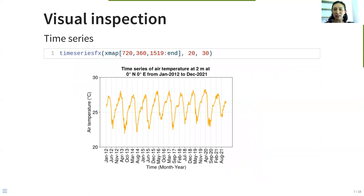We also do a visual inspection of time series. This is a pixel at the crossing between the equator and the prime meridian. Here we observe the air temperature seasonality of ten years.